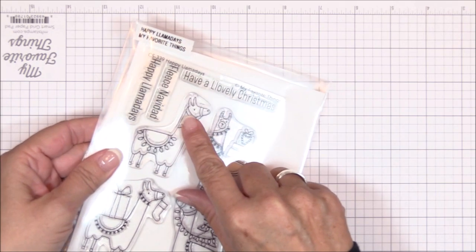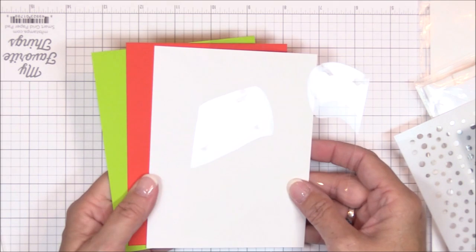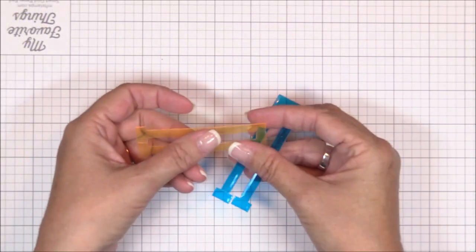My project today will also feature the new Happy Llama Days stamp set as well as the new Snowfall stencil. I'll also be using some limelight, poppy, and smooth white cardstock as well as some acetate for my mechanism.